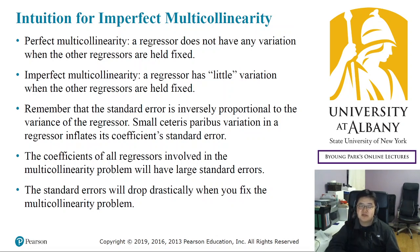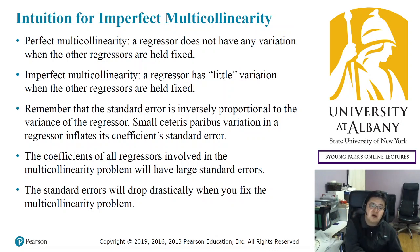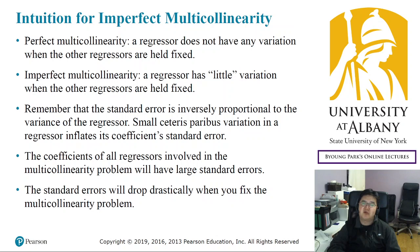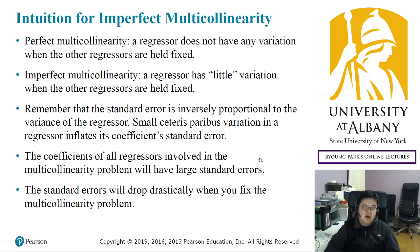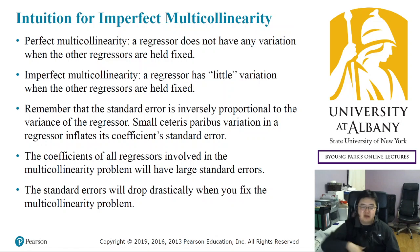If that is the case, remember the multicollinearity problem could be resolved if you drop one of the variables. When you drop some of the variables and the standard errors drop drastically, then you can see it was because of multicollinearity among those variables — and by dropping one, the problem in the ceteris paribus variation was fixed. This is how we detect the multicollinearity problem, and it will be a useful tip when you encounter similar problems in your analysis.